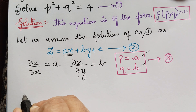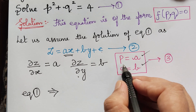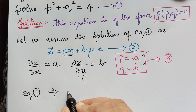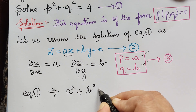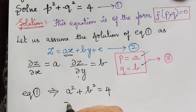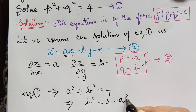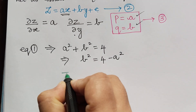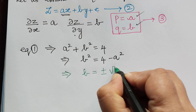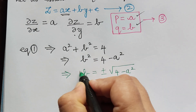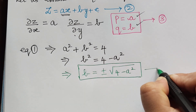From this we obtain the value of b to be equal to plus or minus the square root of 4 minus a squared. Let us mark this as equation 4.